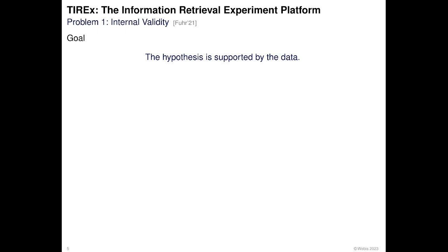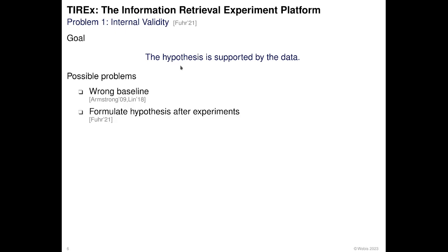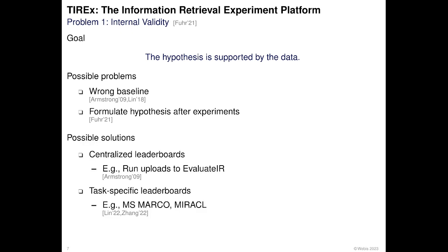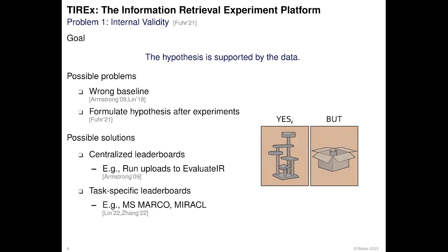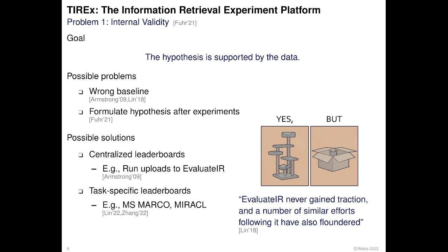Problem one concerns internal validity. The goal of internal validity is that we say something is internally valid if the hypothesis is supported by the data. Some possible problems that would violate internal validity are, for example, choosing a wrong baseline for experimentation, or formulating a hypothesis after we have done the tests and looked into the data. There are some possible solutions like centralized leaderboards or task-specific leaderboards, but they have not gained enough traction to solve this problem of internal validity.